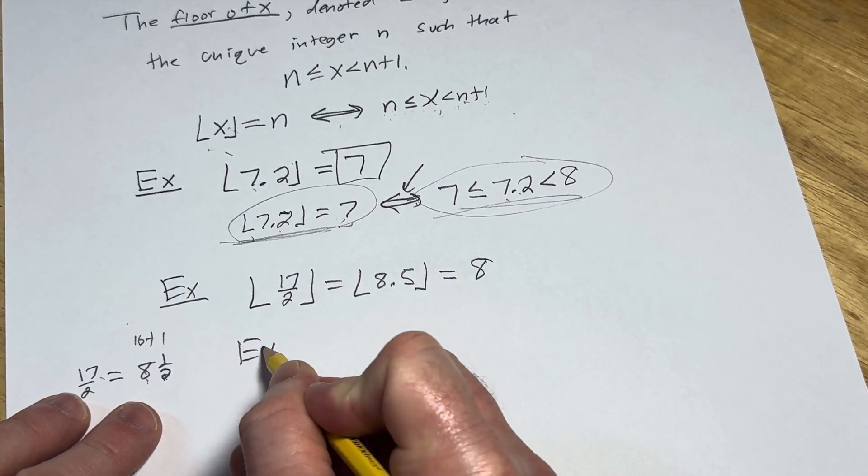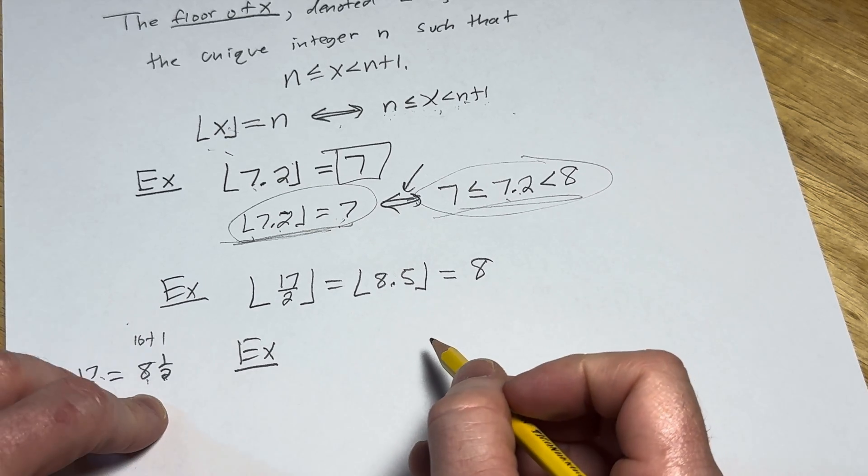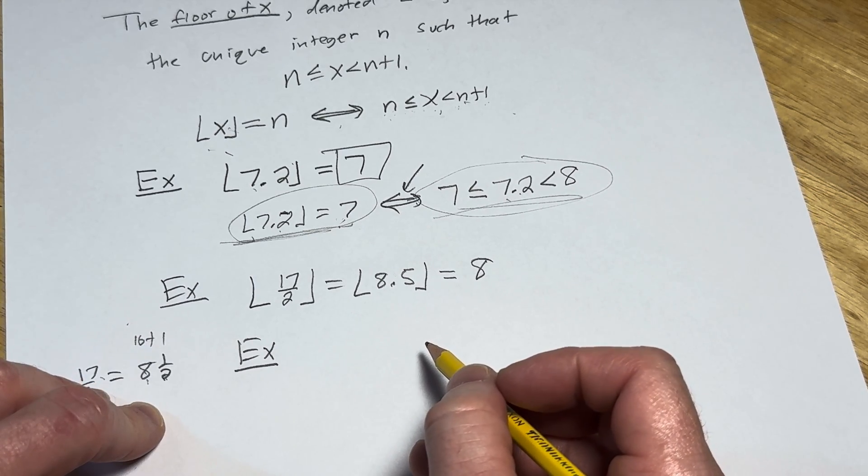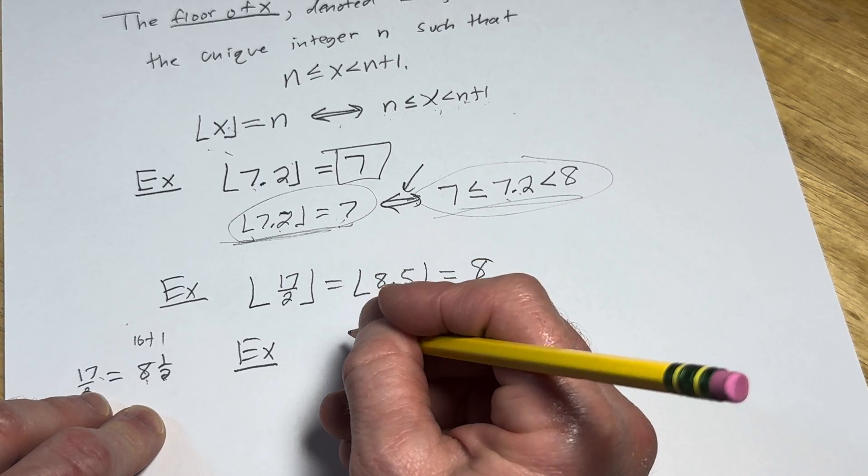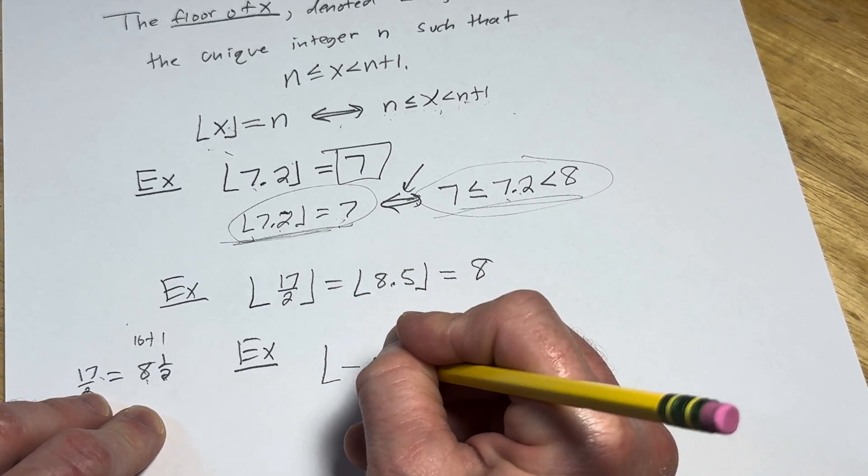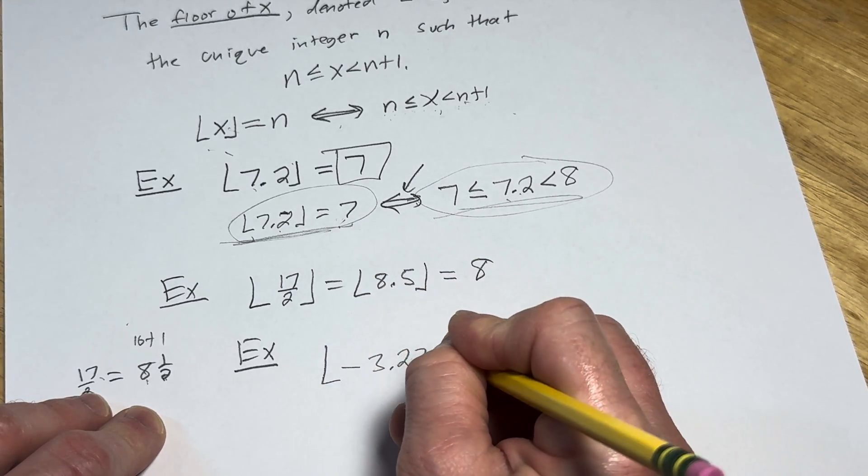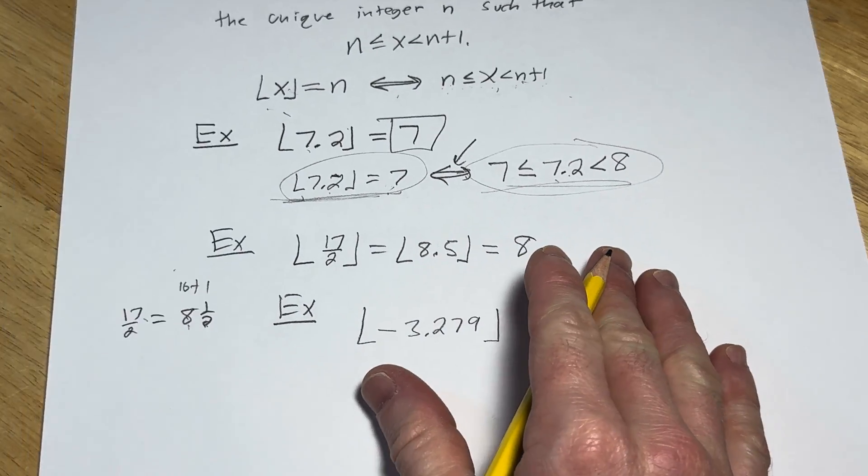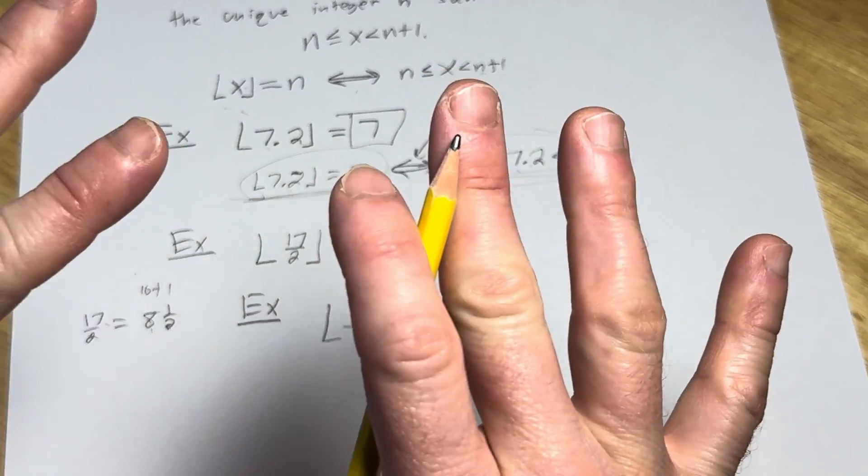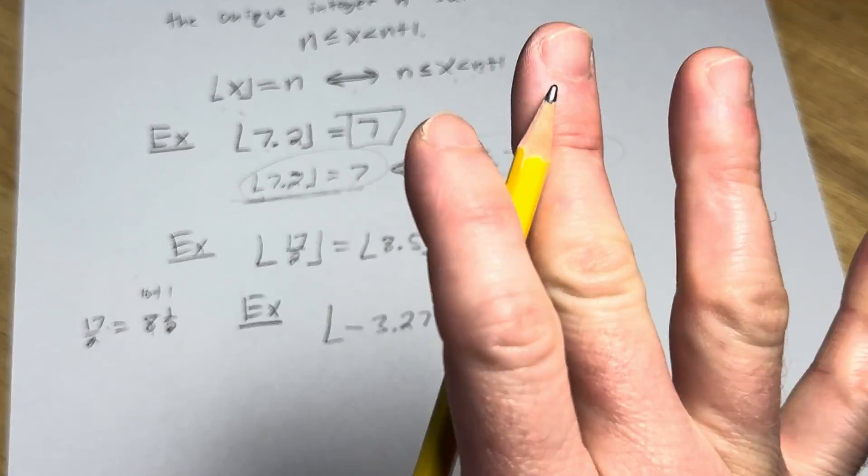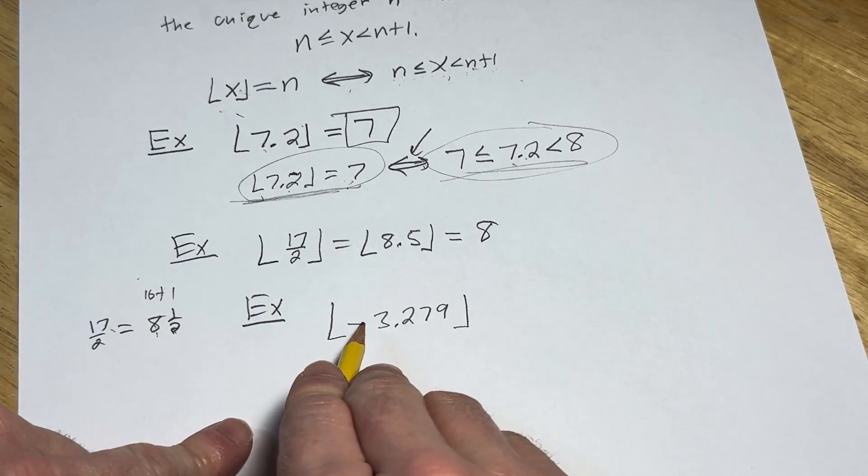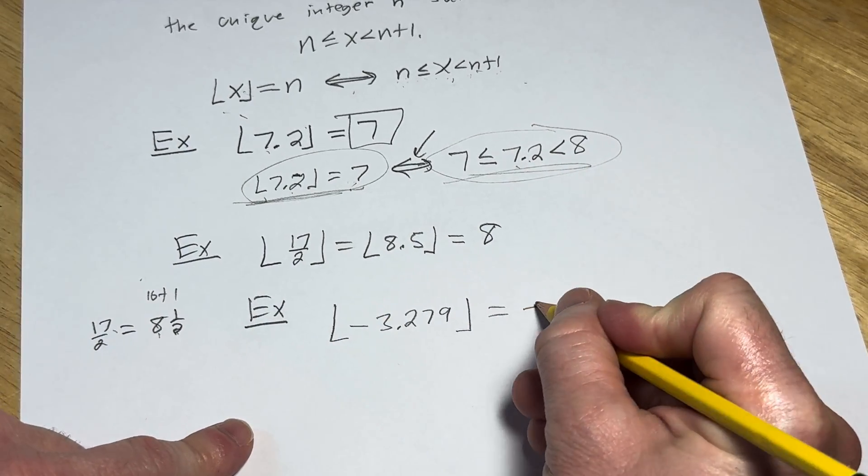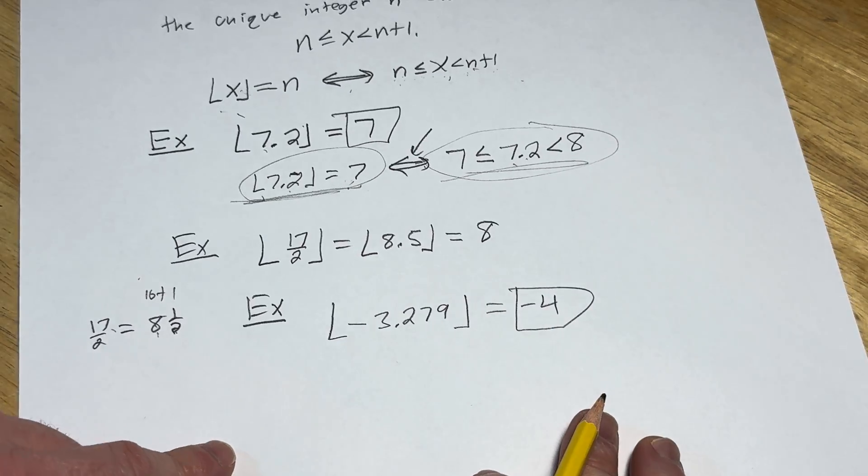What if we had a negative number? What's the floor of a negative number? Let's say we have the floor of -3.279. So in this case, again, you got to bring it down. It's the floor function, it floors it. So it's going to bring it down to -4. That would be the answer there.